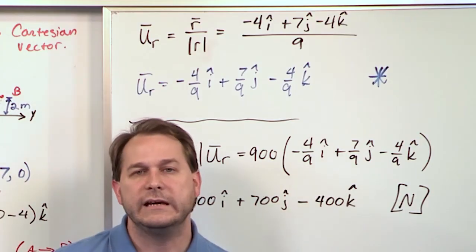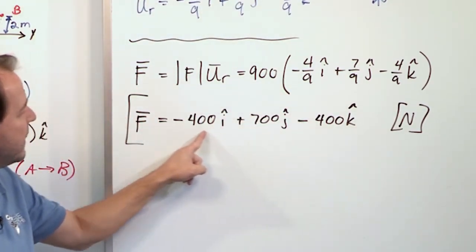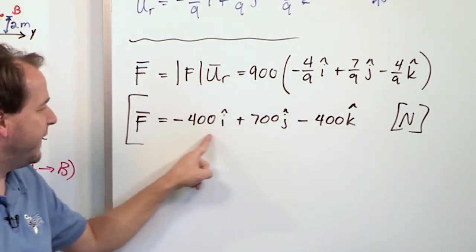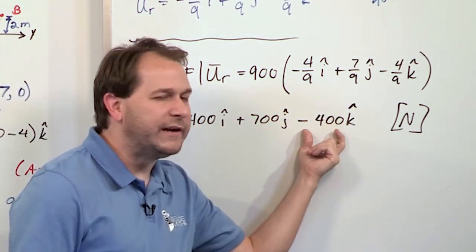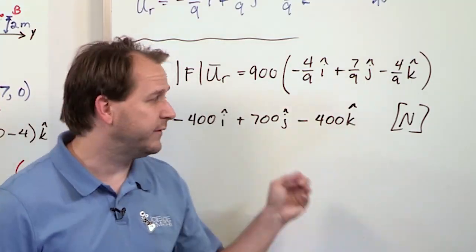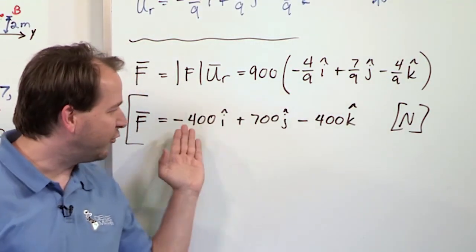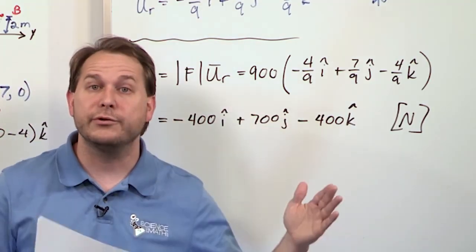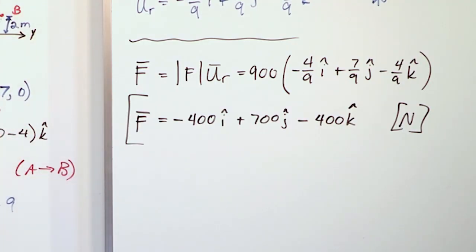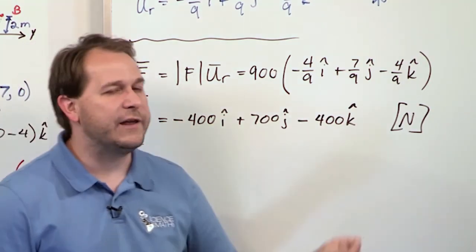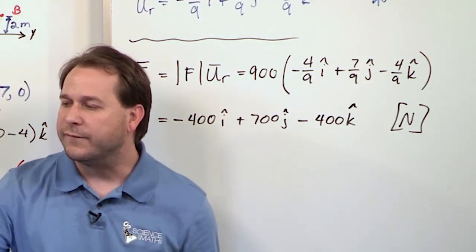This is the Cartesian form of that vector. If we were to take the magnitude of this force vector, negative 400 squared, plus 700 squared, minus 400 squared, we get all that stuff, we take a square root to find the length of this vector, what do you think we're going to do? What do you think we're going to get? If you square each of these guys and you take the square root, you're getting the length of this vector, the magnitude of this vector, what do you think you're going to get? You're going to get 900 newtons. Whip out a calculator and do that, and you'll find out that you get 900 newtons. It all should be self-consistent.